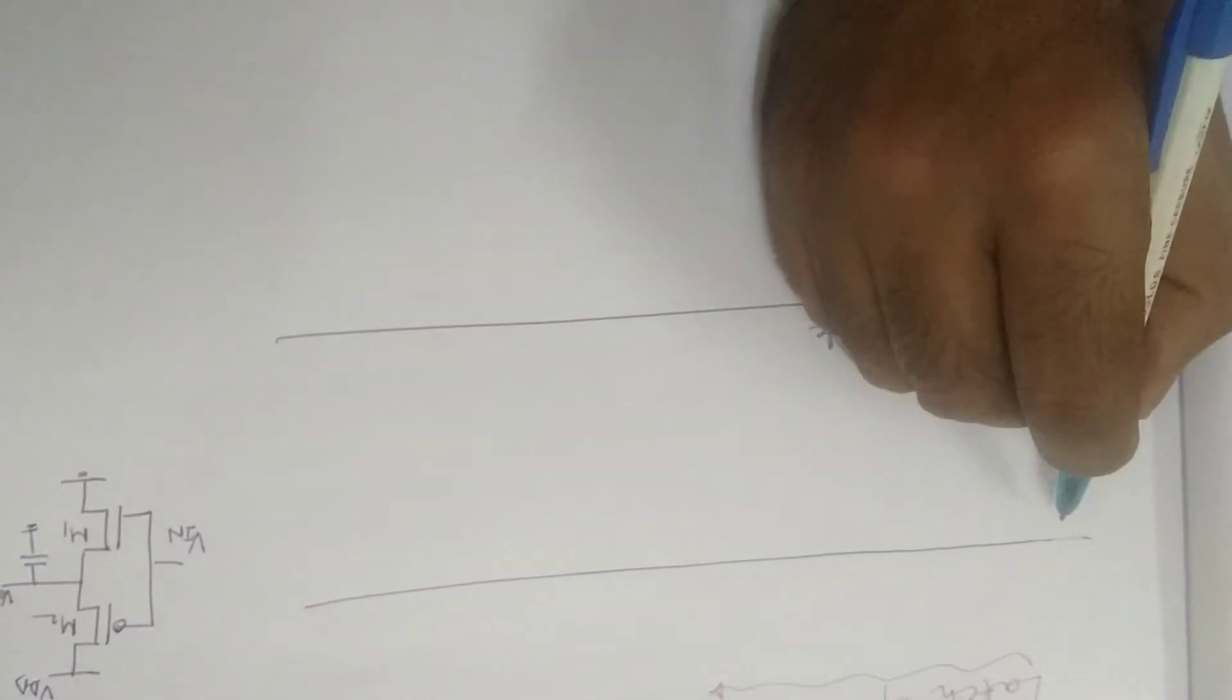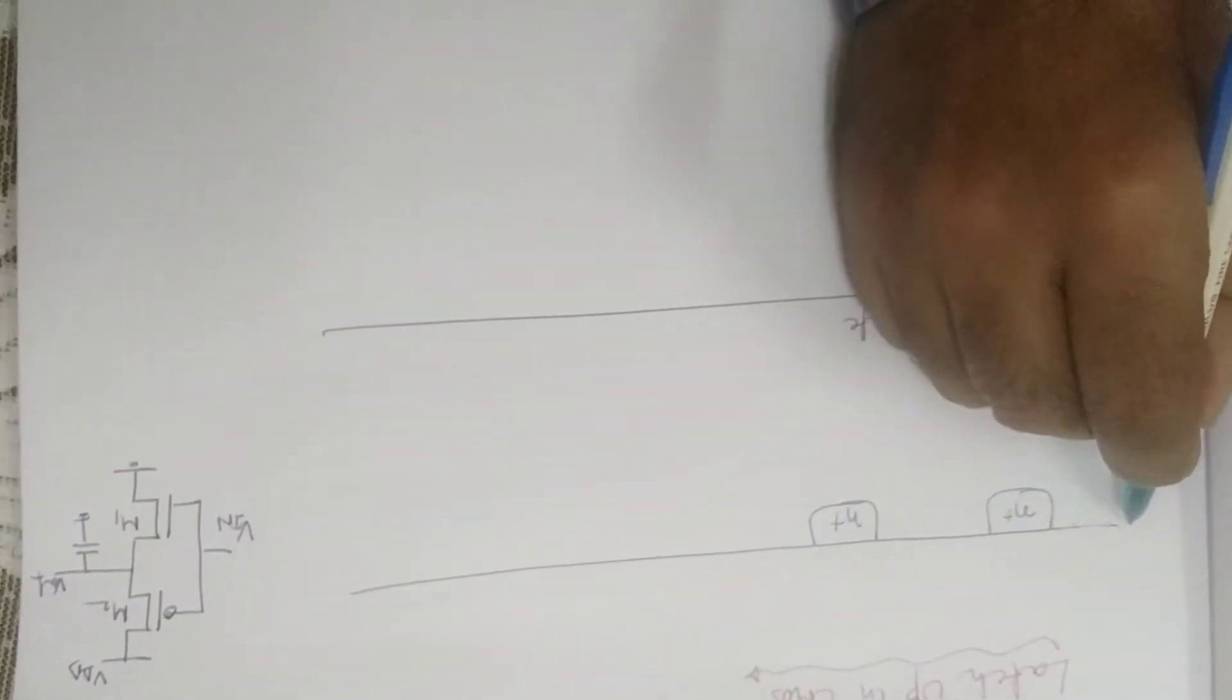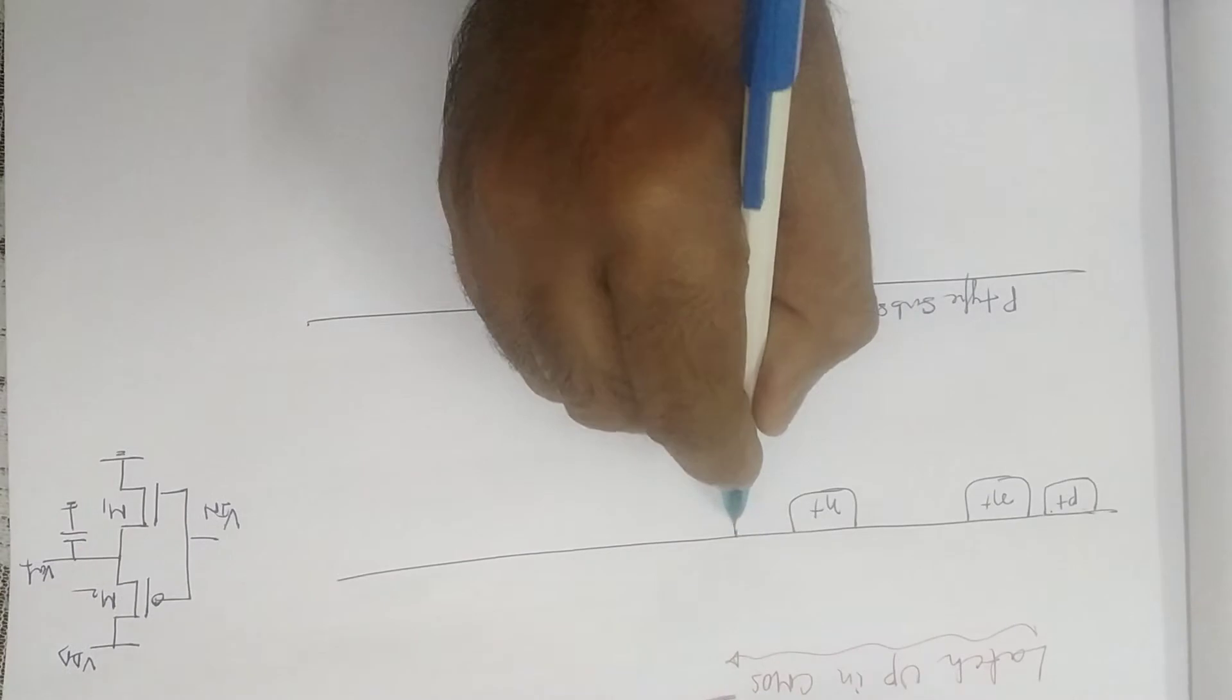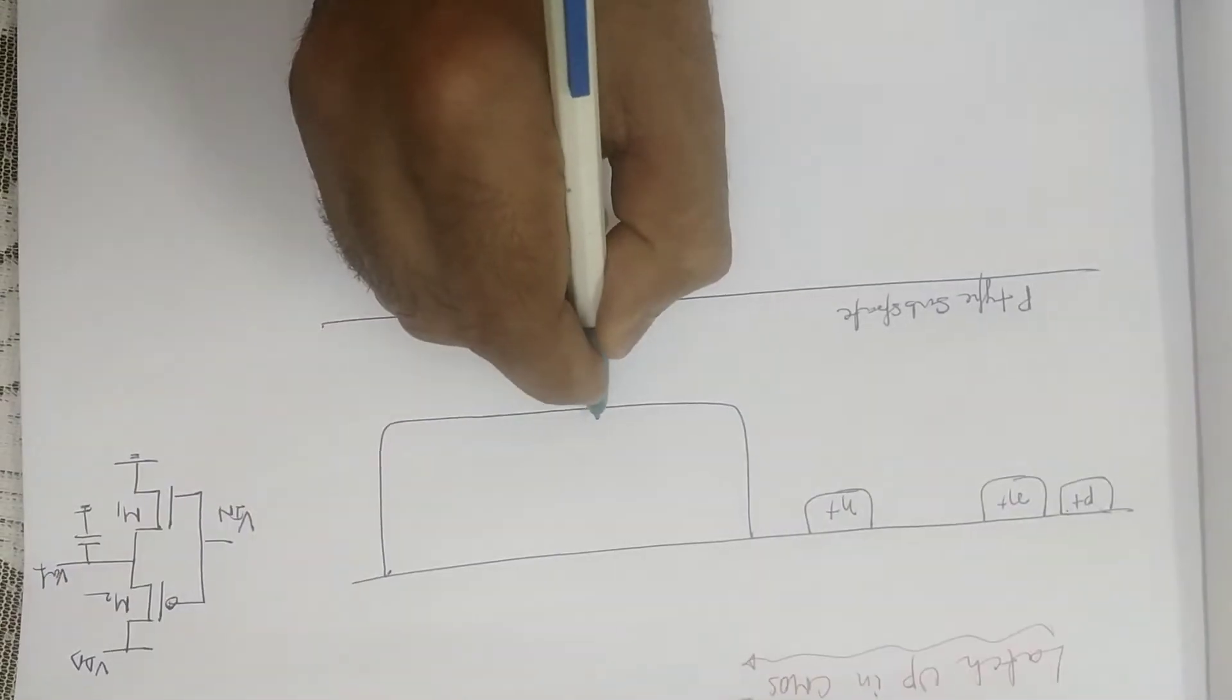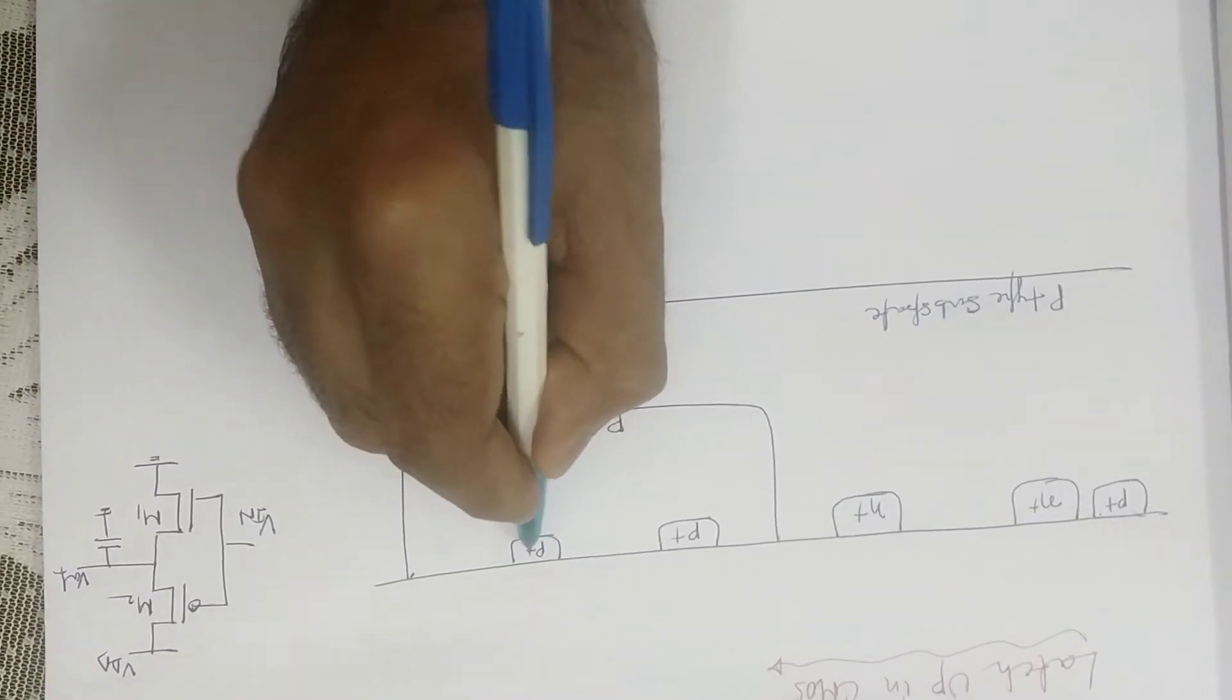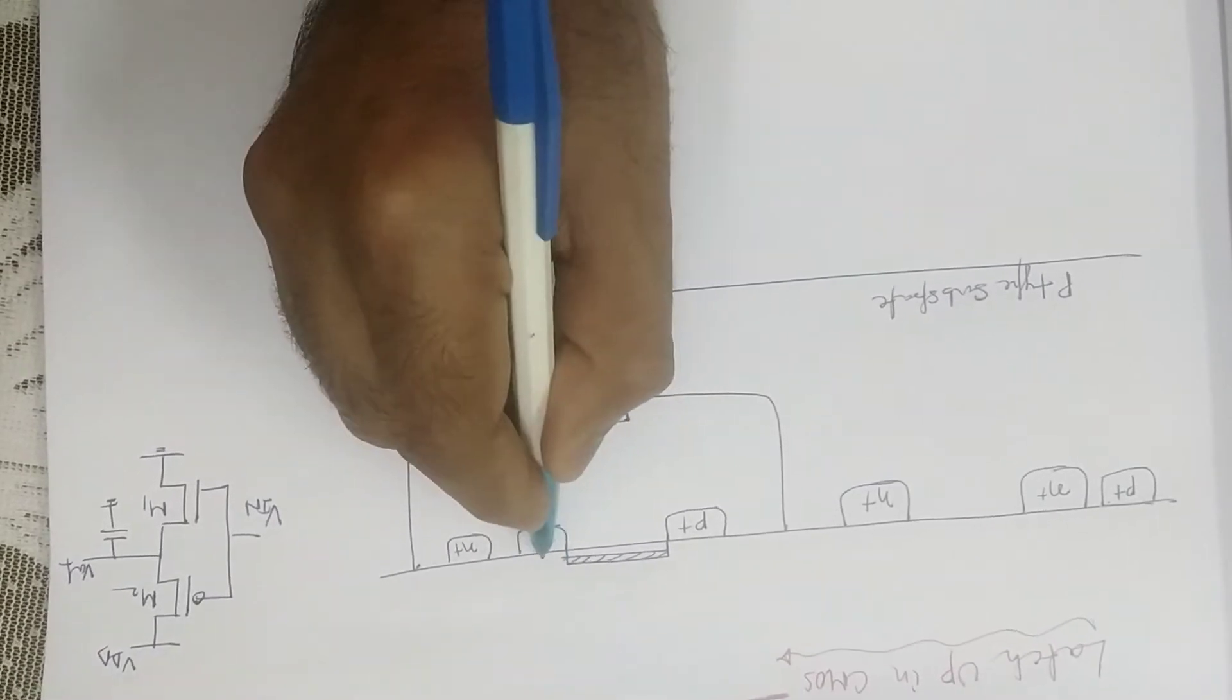And this one is, say, the P-well. We can make P plus region, P plus region, N plus. I think most of you are familiar with this diagram.